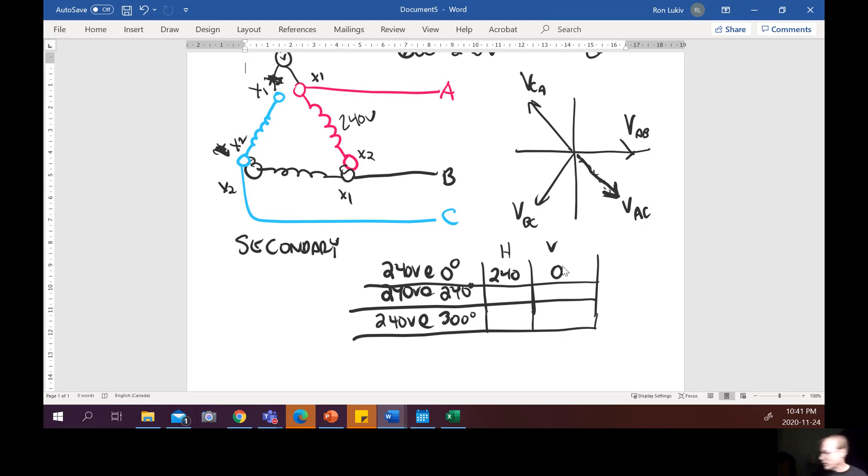Okay so H-B this is going to be 240 volts this will be zero, I just know that by looking at it. Now the other ones I have to calculate so 240 times the cosine of 240 gives me negative 120 and then 240 times the sine of 240 gives basically a negative 208, which makes sense. And I've got 240 times the cosine of 300 gives us plus 120 and then 240 times the sine of 300 gives us negative 208.